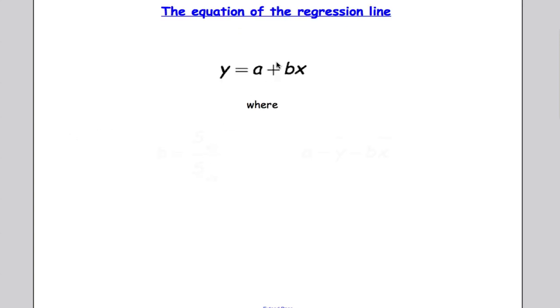Now how do we calculate that? Well what we're going to do is we're going to work out the equation of a line such that y equals a plus bx. Now if you remember from your GCSE that's the same as y equals c plus mx.